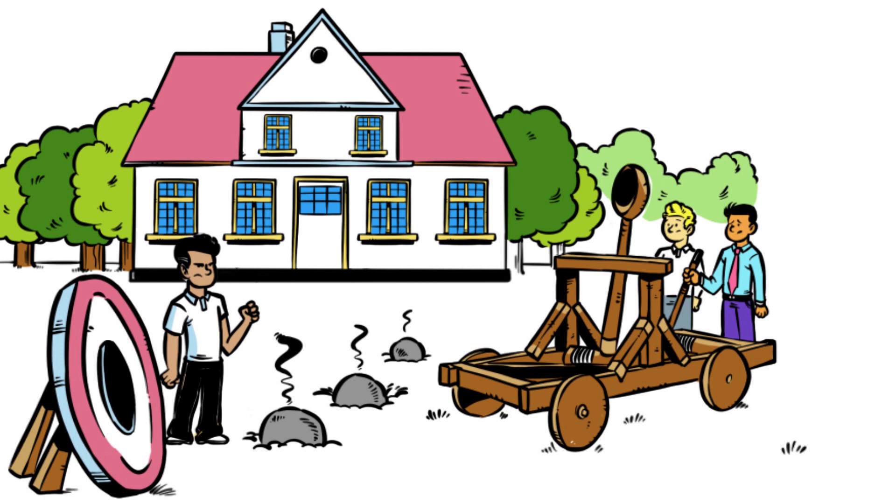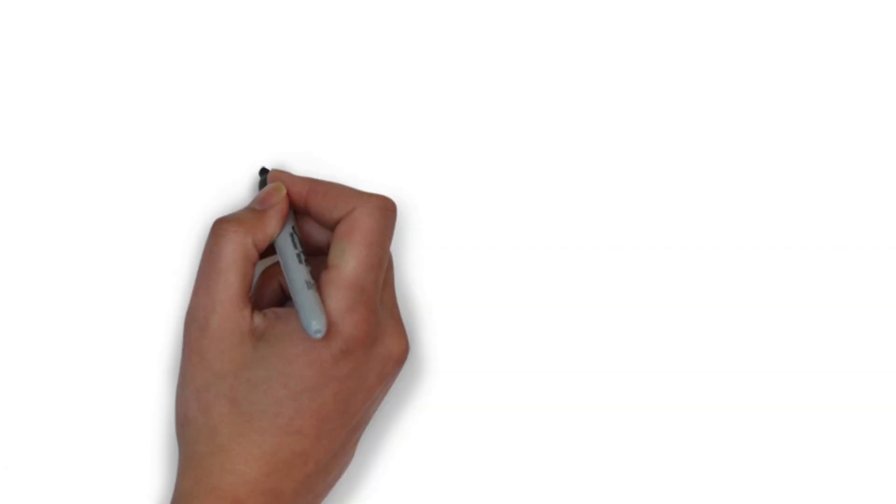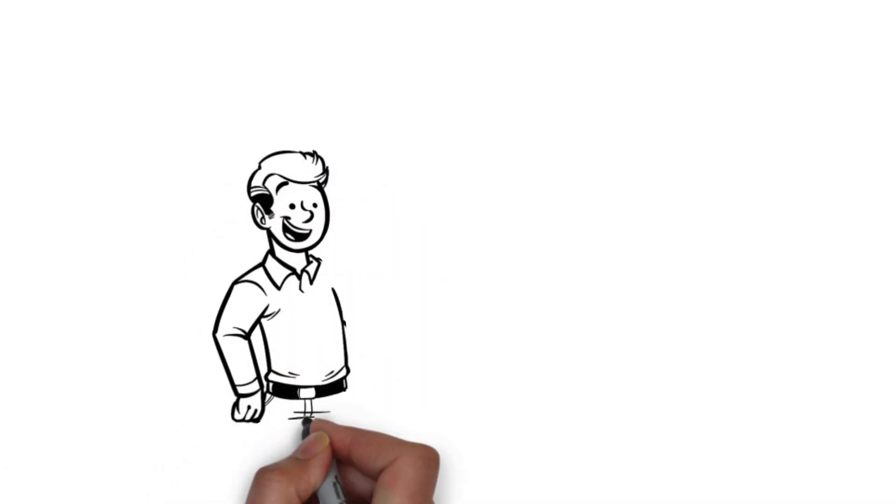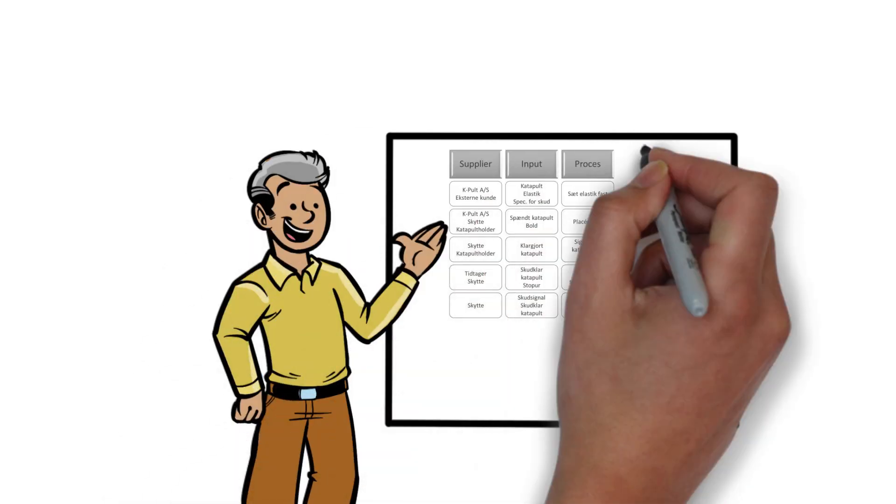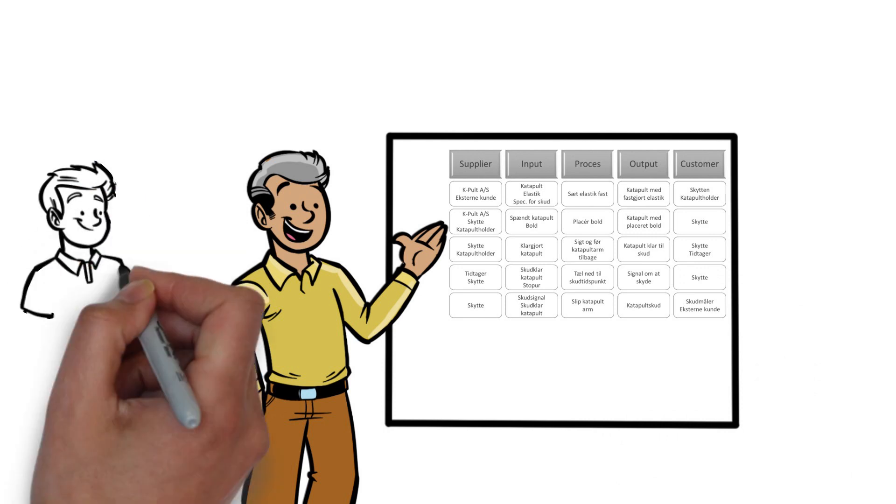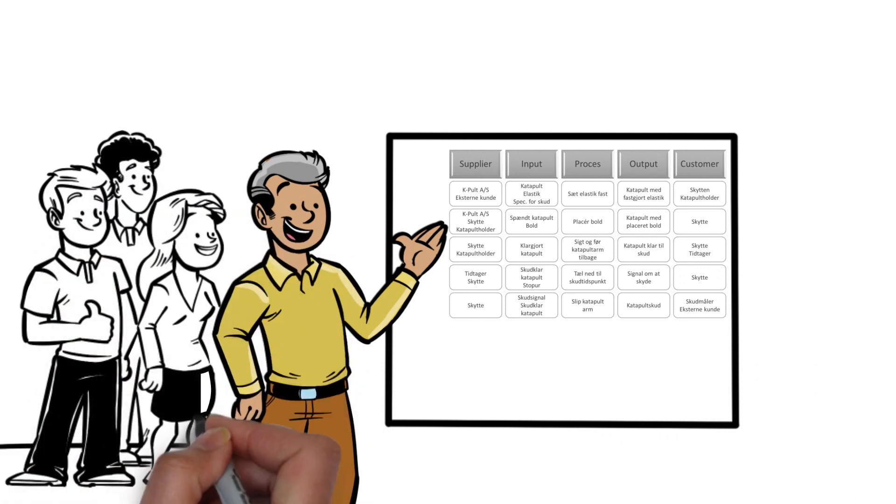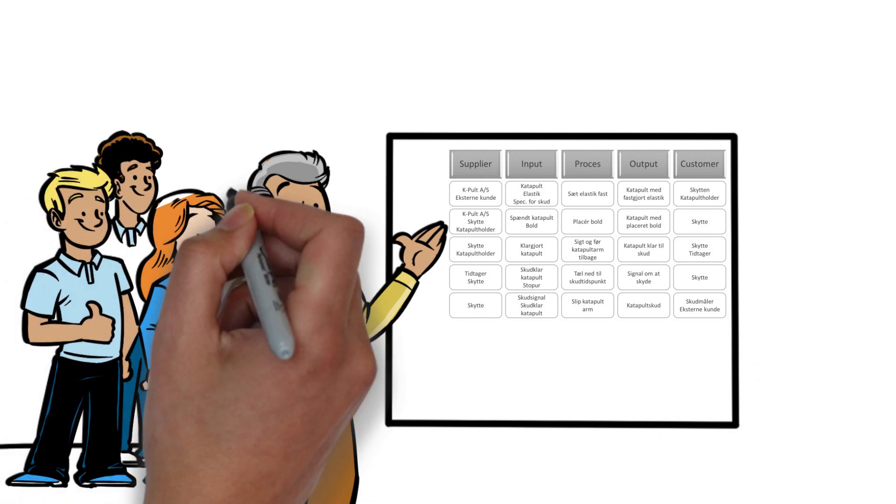We must also define and describe the different processes for delivering shots, Mr. Storm said. Suppliers, purchasing, production, those who fire the shot, everyone participated in describing the current process for production and firing shots. They now got a clear and common picture of the catapult process.